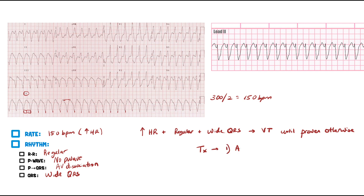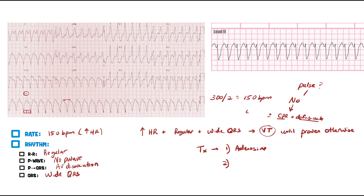The first treatment step: the very first question you must ask is — do they have a pulse? If there is no pulse, go to the ACLS algorithm: start CPR and get ready to defibrillate. You'll also use epinephrine and amiodarone in between those rounds.